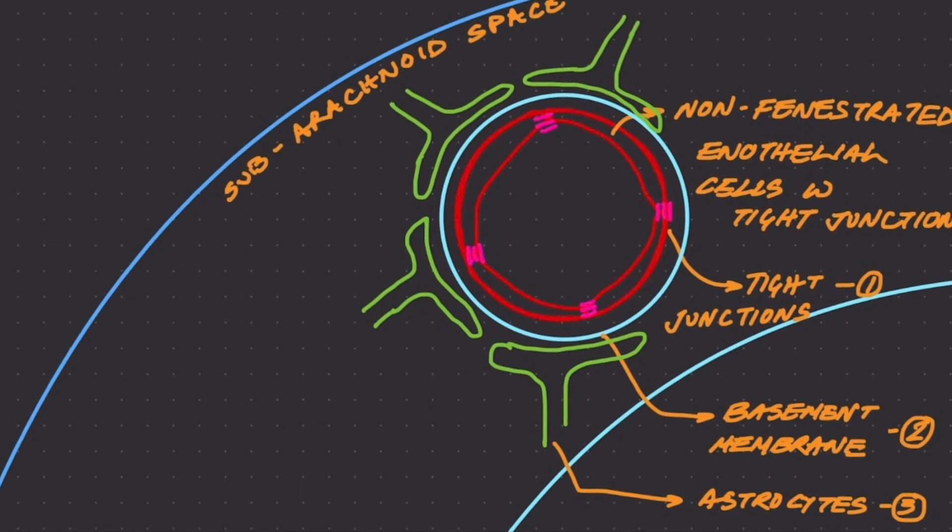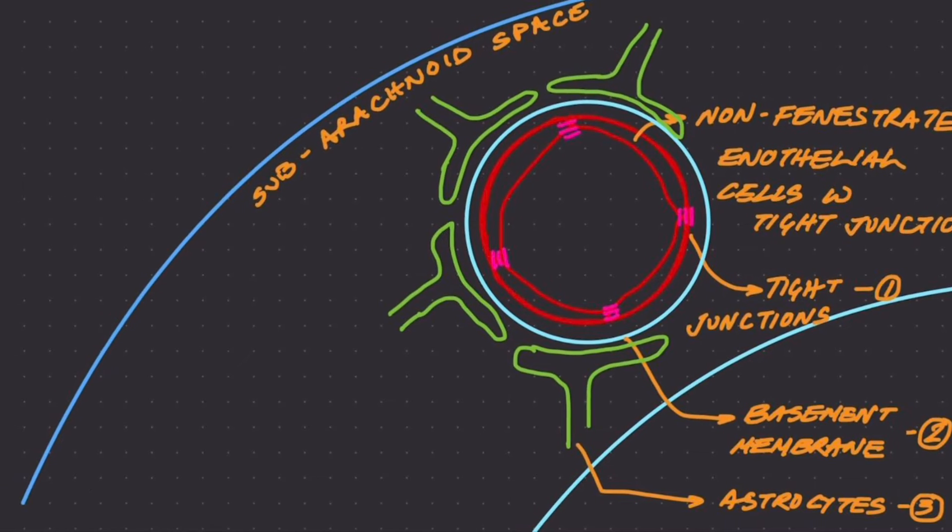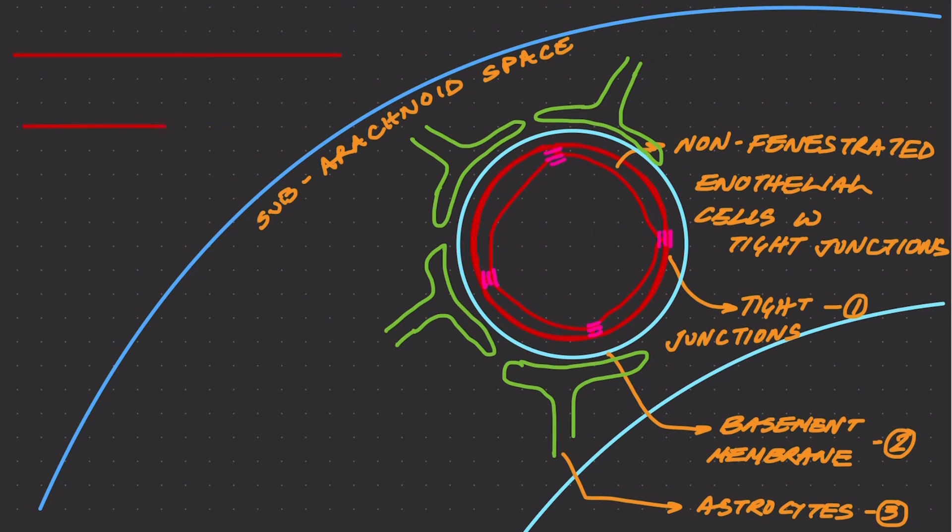If this is the blood vessel, then the astrocyte foot processes would be lining the entire blood vessel in the central nervous system. It's almost as if the astrocytes are latching on the blood vessel and the feet following the blood vessel everywhere in the central nervous system.